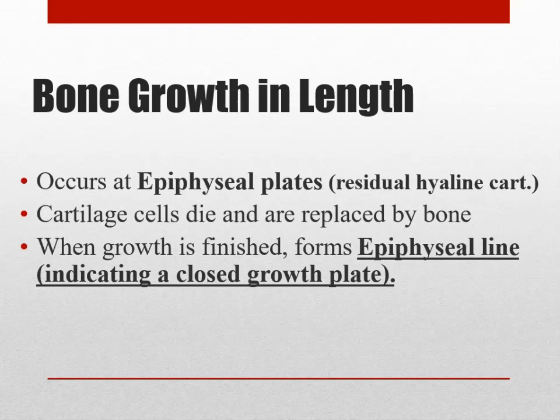Every joint around the body belongs to a class. Some joints don't move at all — they're a joint, but they don't move. Some move a little, some move a lot. Some joints will have cartilage, some won't. The class of joint that makes an epiphyseal line — since it does not move, it's closed and fused — we're going to call synostosis.